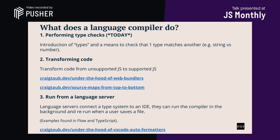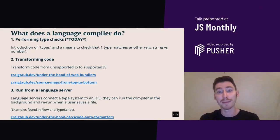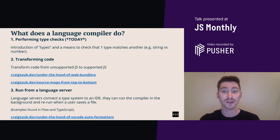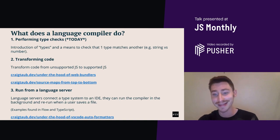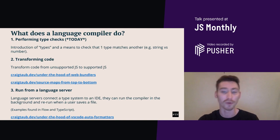I actually explore transforming code more in my post on web bundlers and my posts on source maps. And then three, run from a language server. For a type system to work in a development environment, it's best if it can run type checks in an IDE and provide instant feedback for the user. Language servers connect the type system to an IDE — they can run the compiler in the background and rerun when a user saves a file. Popular languages such as TypeScript and Flow both contain a language server. For VS Code users, the main extension spawns a language server.